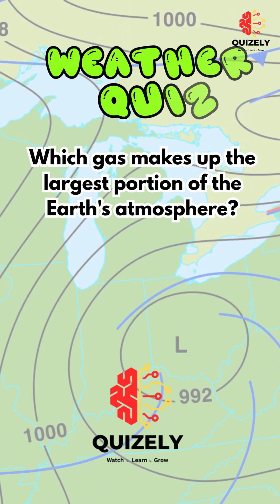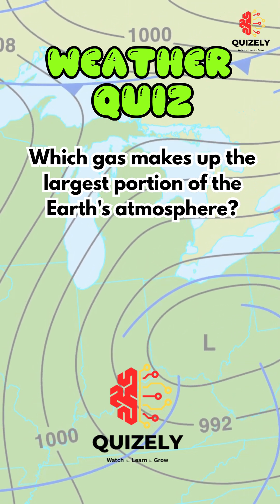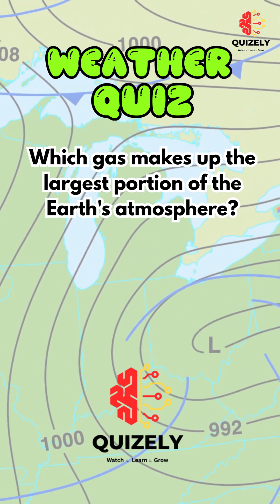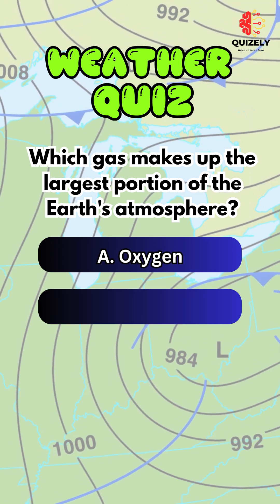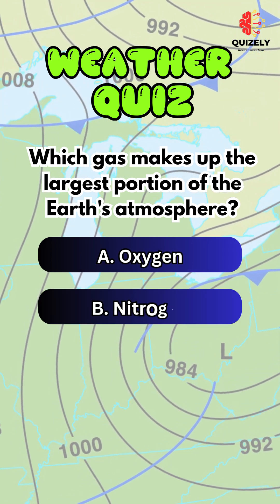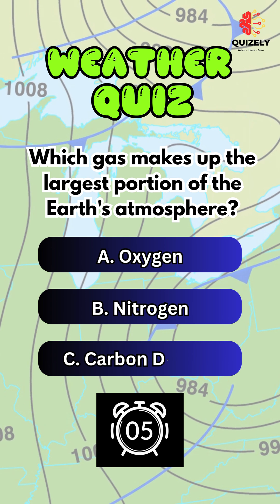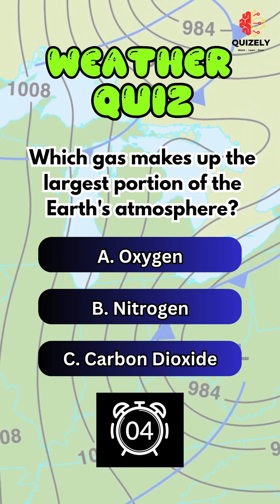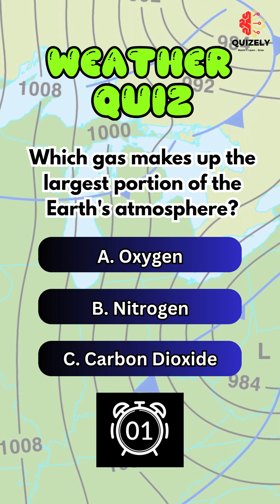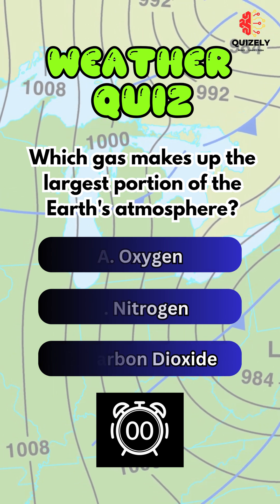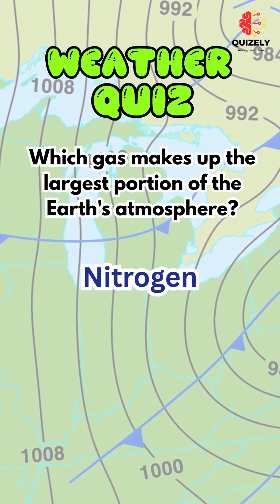Which gas makes up the largest portion of the Earth's atmosphere? A. Oxygen. B. Nitrogen. C. Carbon dioxide. Correct answer is nitrogen.